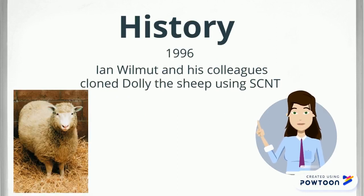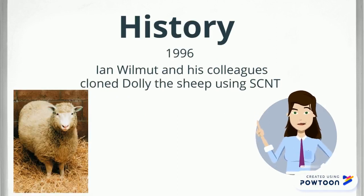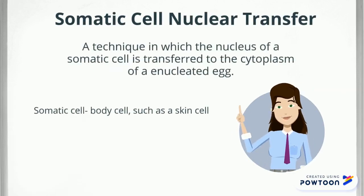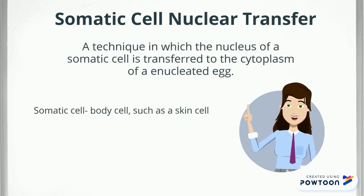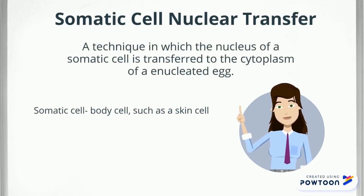Now that you know the history of somatic cell nuclear transfer, let's get into the process. It is a technique in which the nucleus of a somatic cell, which is a body cell such as a skin cell, is transferred to the cytoplasm of an enucleated egg.